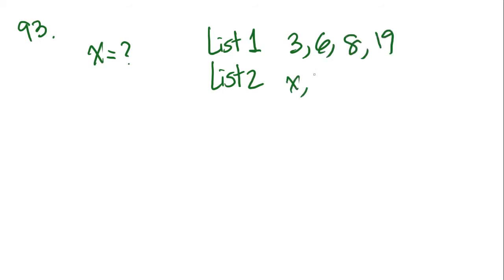On to problem 93, which says if the median of the numbers in list one is equal to the median of the numbers in list two, what is the value of x? So x is what? And here are the lists. List one, list two. You have 3, 6, 8, and 19. And for list two we have x, 3, 6, 8, 19.